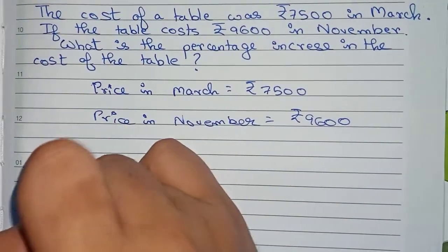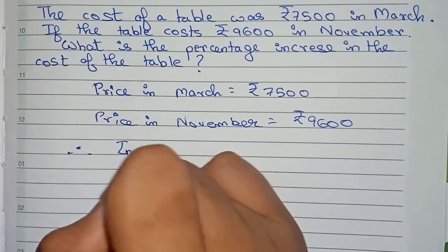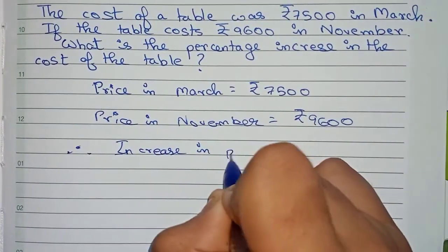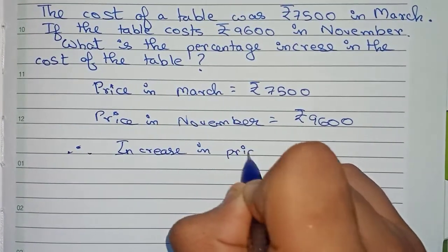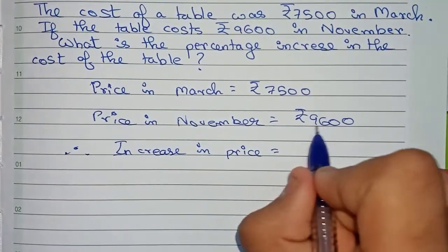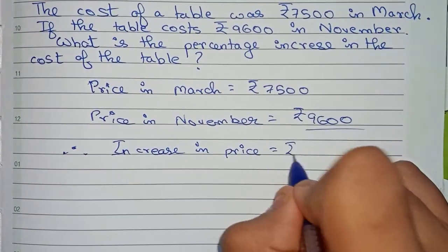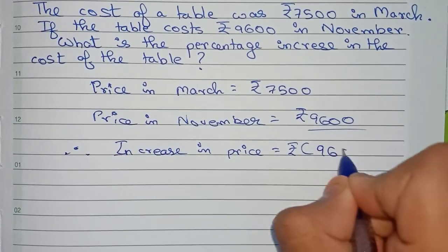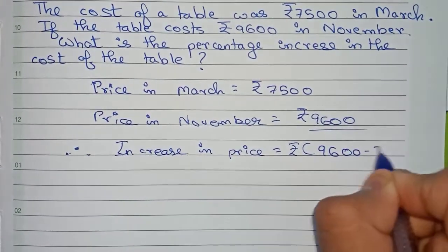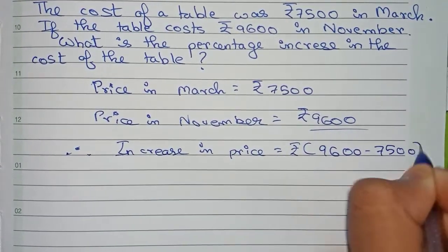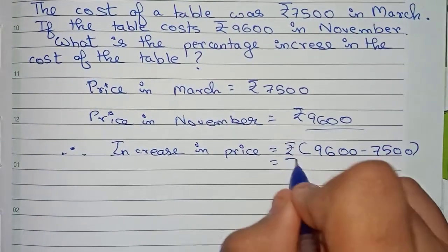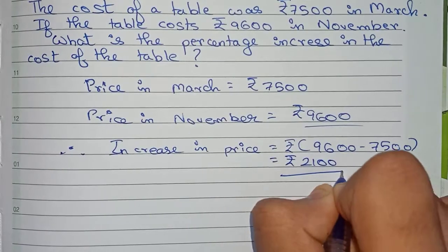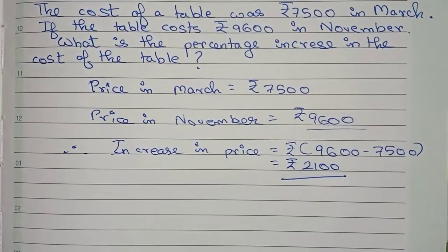Now we have to find the increase in price. The increased amount is 9600 minus 7500, which becomes rupees 2100. So this is the increased amount.